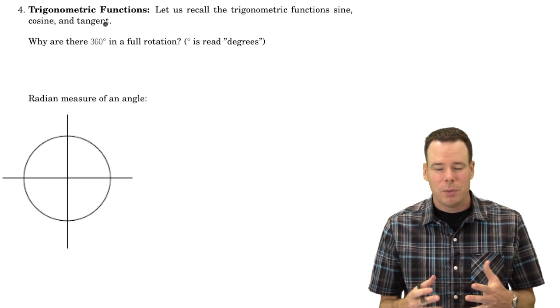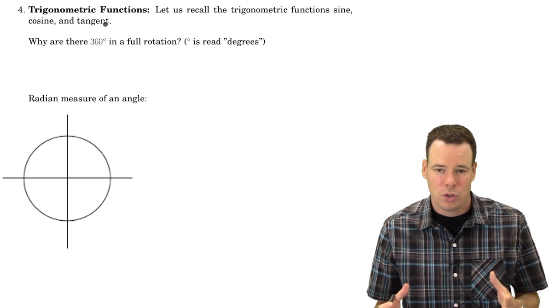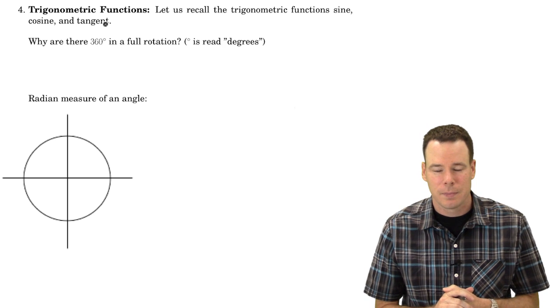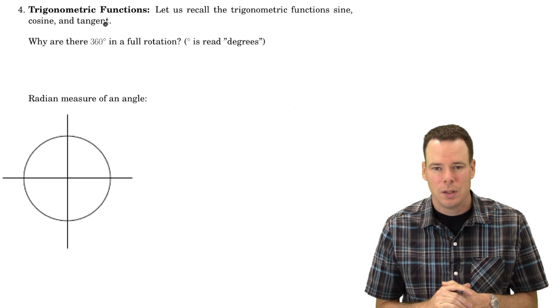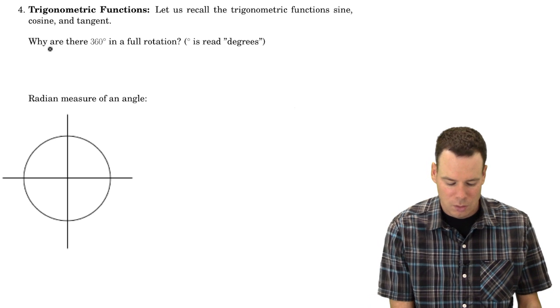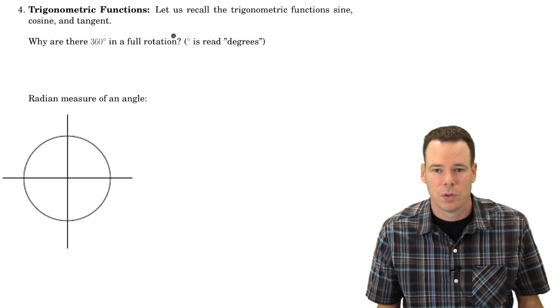Remember that trigonometric functions are connected with geometry. They're connected with angles. And the first thing I want to do is ask the question, why are there 360 degrees in a full rotation?